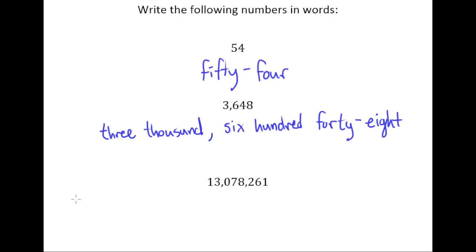Now let's take a look at this last example. We've got two commas involved, and so since there's two commas we know that this 13 is representing millions. So we're going to start by writing out thirteen million.